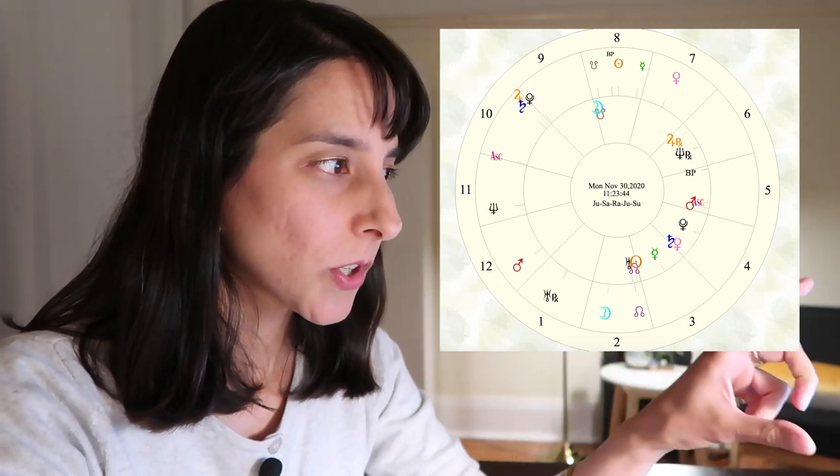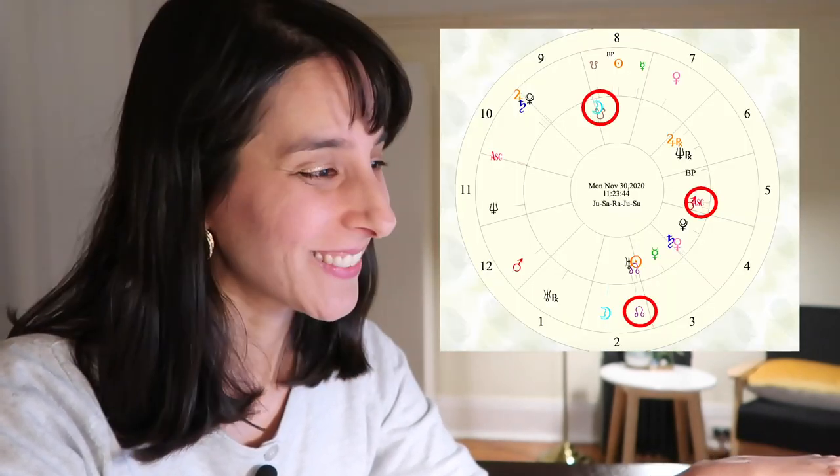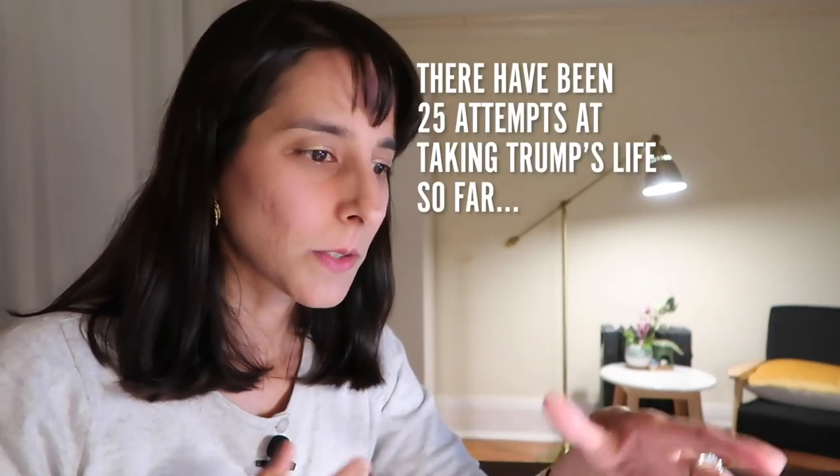You've got the nodal return — the Rahu-Ketu axis nodal return. Rahu is seventh from the moon and tenth from the ascendant. I'm not exactly sure how to read all of this but it points to some kind of major transformation and transition, and it is career related. So though the chart is looking strong for a win, something is going to happen. The press is saying the election could be delayed.